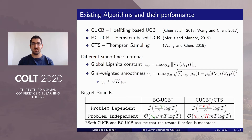Importantly, the Gini-smoothness can be lower bounded by the global Lipschitz constant, which makes the regret bounds using the Gini-smoothness tighter than the regret bounds using the global Lipschitz constant.